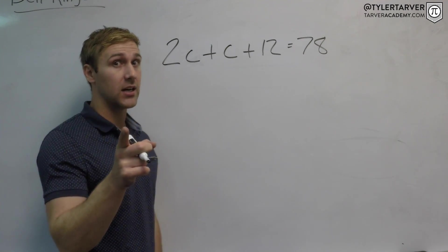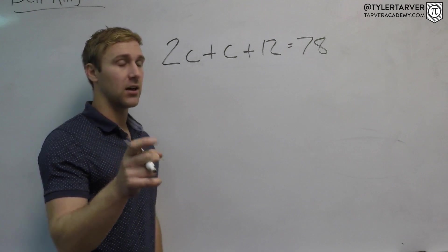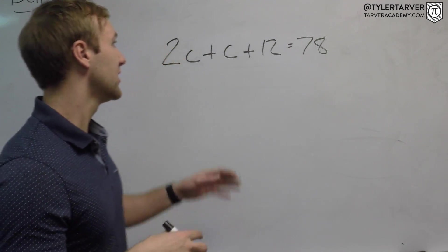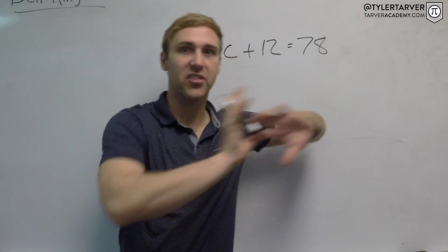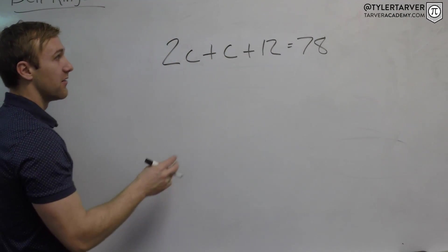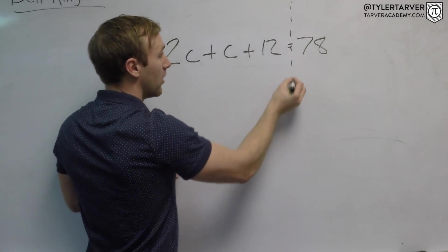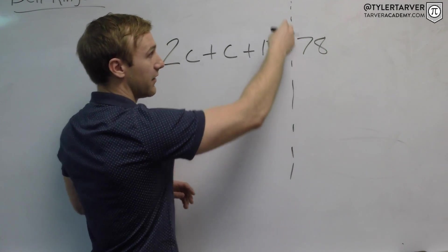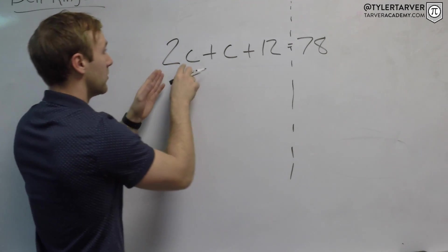Okay, so our goal here is to get C by itself. Essentially, we need to combine our C's and then get everything else to the other side of the equal sign. First thing we can do is simplify this expression before we ever try to go across the equal sign. We want to combine stuff that's on the same side of the equal sign.